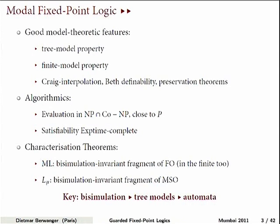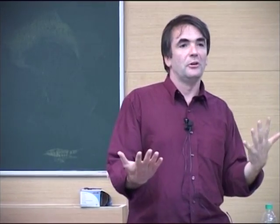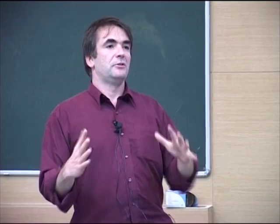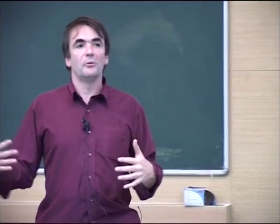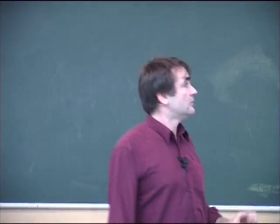The key to most of the proofs relevant here, or that have been relevant for the mu-calculus, is that we have the bisimulation relation that allows us to manipulate models. Instead of working with arbitrarily complicated models, we can always massage things into trees, and then we can let automata run and get whatever we like.